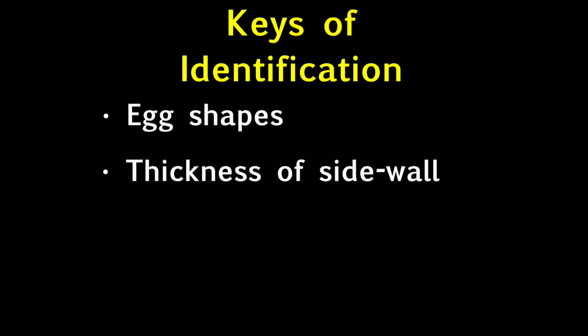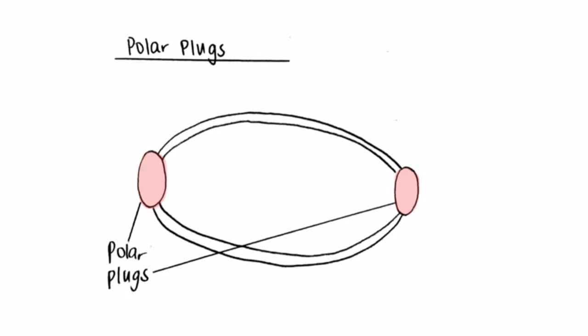Thirdly, we can also take note of the presence of polar plugs. Polar plugs look like caps on both ends of the eggs. They can be seen in whipworm eggs, as we can see them protruding out the two ends of the egg.